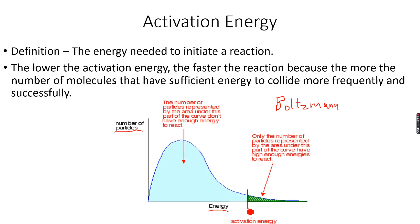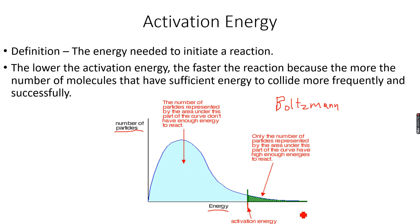They must have at least the activation energy to react. This side represents the molecules that do not react upon collision — they result in unsuccessful collisions. The green area represents the number of particles with energy more than the activation energy, meaning particles that have enough energy to collide and react. Among so many particles distributed like this, only a few of them can collide successfully and react.